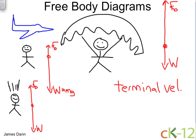And again, at terminal velocity, V equals a constant, it's not changing. And therefore, the acceleration is zero. And the free body diagram will completely balance.